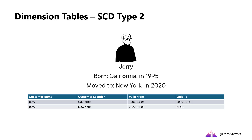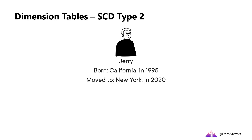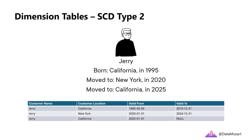One of our customers is Jerry. Jerry was born in California in 1995. Jerry has been located in California from the day he was born, implemented through a null value for the date in the valid-to column. Now imagine Jerry moved to New York for college in 2020. In SCD Type 2, we add a new row for Jerry, setting the valid-from value to the date when he moved to New York, while setting the valid-to date for the California record. If Jerry moves back to California in 2025, we simply add another new record. This is important because, if we analyze sales revenue per location for the year 2021, Jerry's revenue should be allocated to New York — not California. Simply overwriting his location would have lost historical track of changes, which is why slowly changing dimension is of paramount importance.